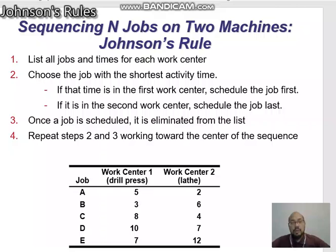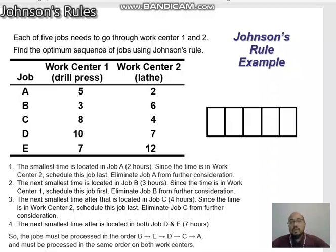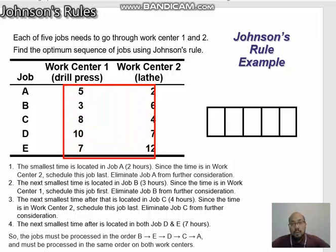To illustrate this, look at the example. Each of five jobs needs to go through work center one and two. Find the optimum sequence of jobs using Johnson's Rules. We have the processing time information at both work center one and two, so we find the smallest time.